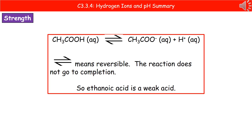The way we represent that in the equation is using the reversible arrow symbol — it has half an arrow going to the right and half an arrow going to the left. As soon as you see that arrow, it tells us that the reaction is not going to completion, i.e. not all of the hydrogen ions are being released from the molecule. So we have a weak acid.